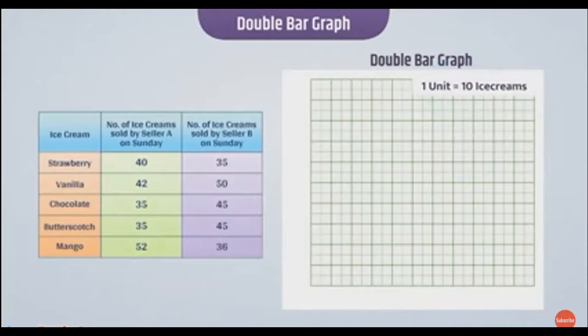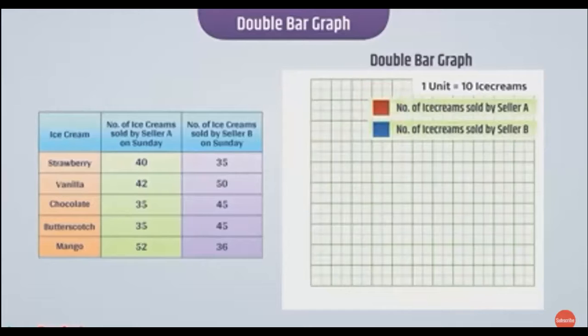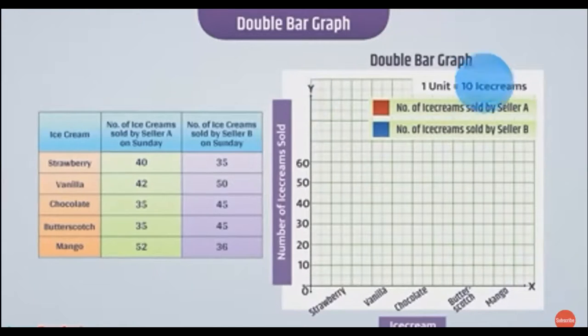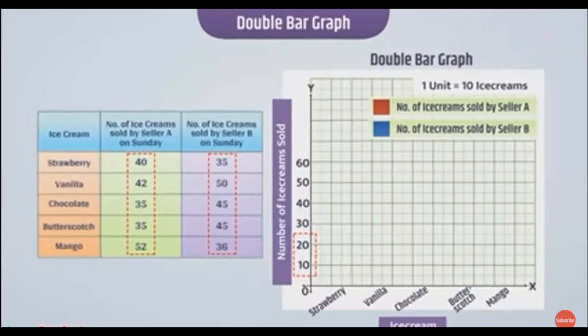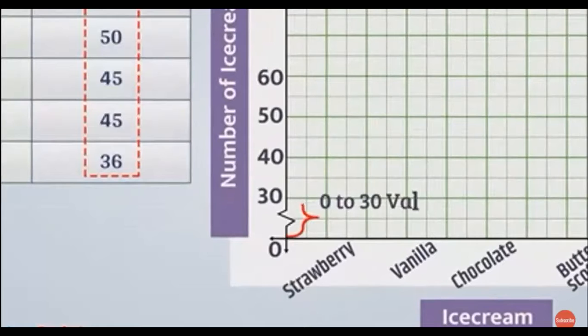Here we have to draw 2 bars, so we must differentiate them using legends. We can draw one type of bar to show ice creams sold by seller A and another type for seller B. First, draw vertical and horizontal axis. Show categories like strawberry, vanilla, chocolate on the horizontal axis and number of ice creams on the other axis according to the scale. Since values less than 30 are not present, we can skip those values and start from 30, drawing a kink mark which shows that values from 0 to 30 are not taken.